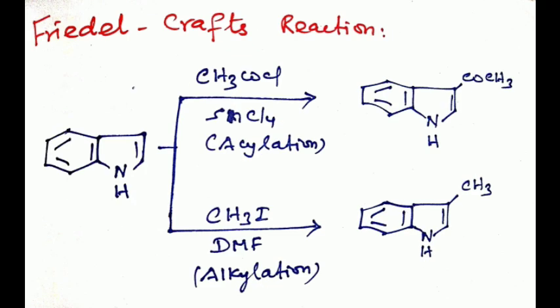Friedel-Craft reaction: indole combined with acyl halide in the presence of tin tetrachloride, that is acylation, we get 3-acetyl indole. Whereas in alkylation, indole combined with methyl iodide in the presence of dimethyl formamide (DMF) we get 3-methyl indole.